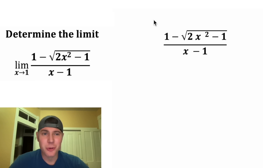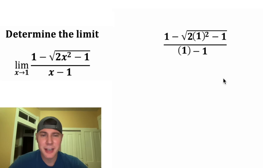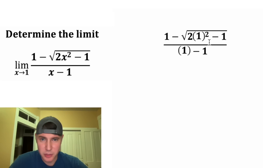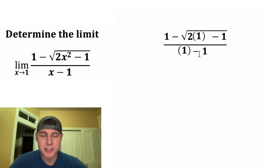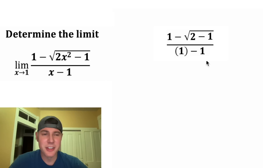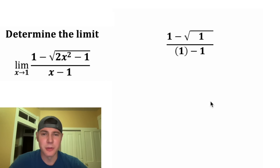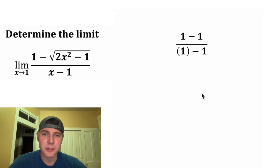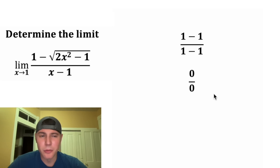First thing we can do is direct substitution — plug in 1 for each of the x's and evaluate the expression. 1 squared is 1, 2 times 1 is 2, and 2 minus 1 is 1, so the square root of 1 is 1. On top we get 1 minus 1, and on the bottom we also get 1 minus 1. That gives us 0 over 0, which is an indeterminate form.